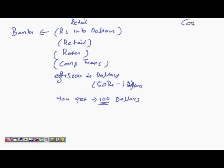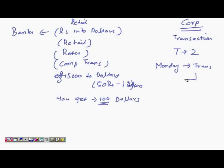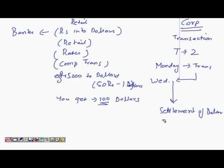So if a corporate transaction happens on Monday, the settlement — the credit to the account — occurs on Wednesday, which is T+2 days. The rate used is locked in on the transaction day (Monday), even though the actual credit happens on Wednesday. That is the normal time it takes to settle accounts.